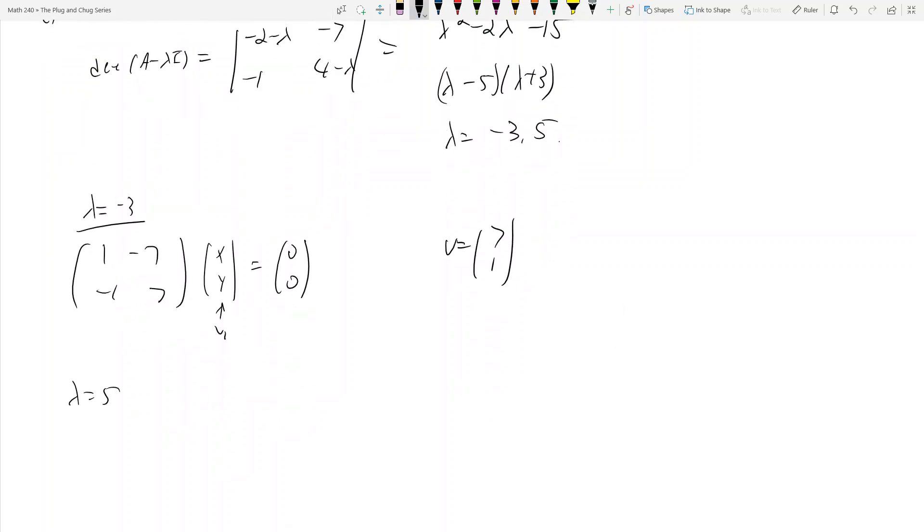And then λ = 5. You subtract 5 from the diagonals and get [-7, -7; -1, -1]. Then you see that v₂ can be (1, 1), but we're in two dimensions. Actually, v₂ is (-1, 1).